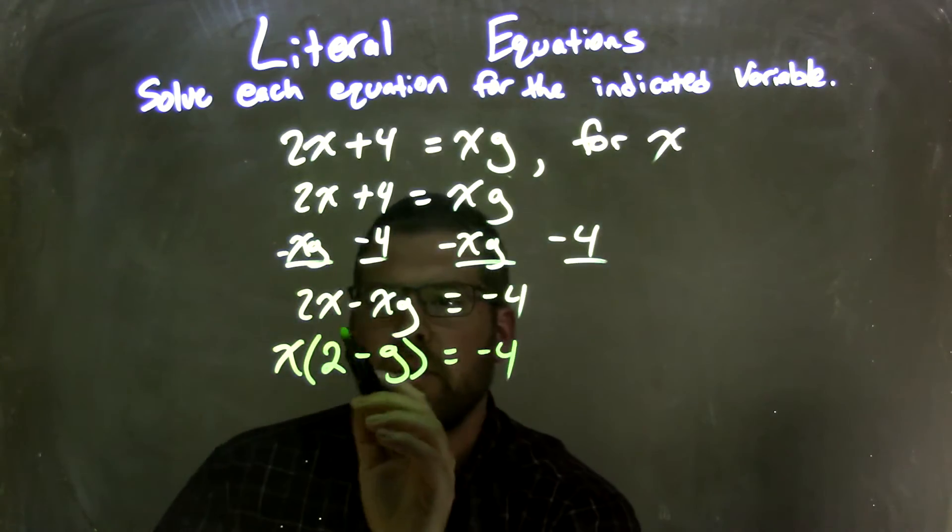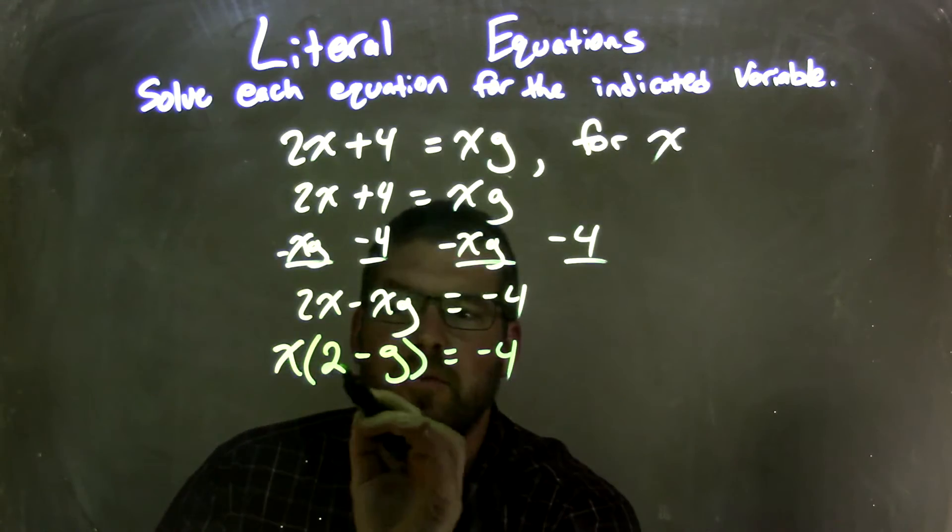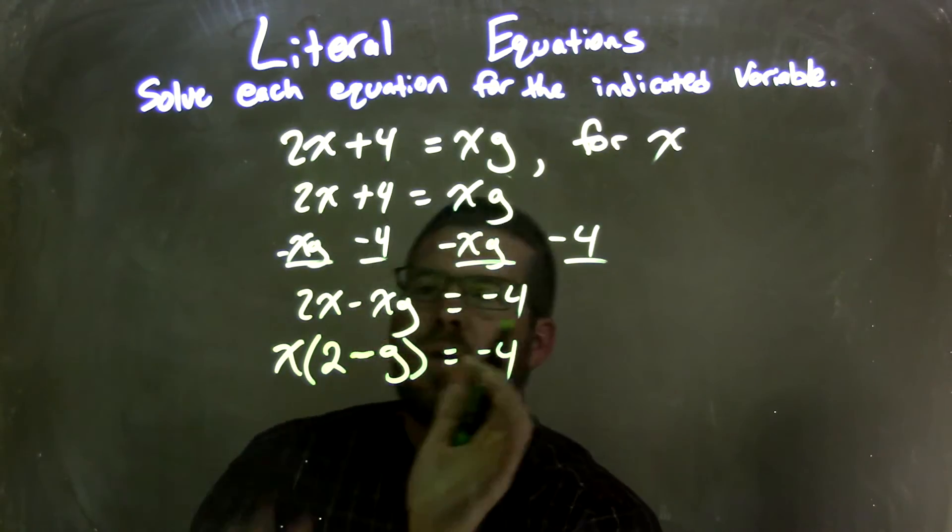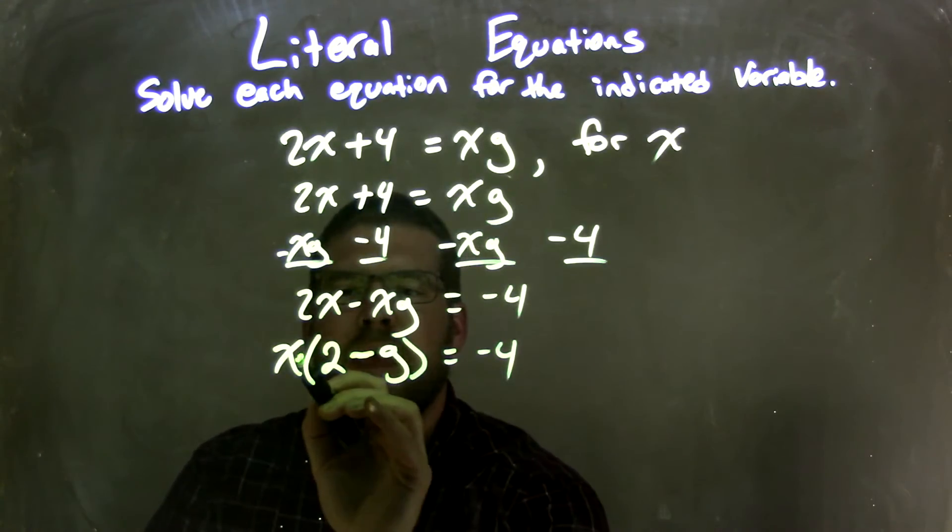So let's think about that for a moment. If I distributed that x back into the parentheses, I had 2x, right? x times 2 is 2x, and x times g is xg. The subtraction sign would still be there. So I'm pulling out an x from both parts, which gives me the multiplication on the outside.